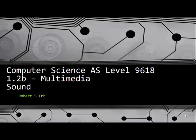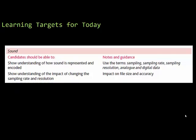In this video we're wrapping up the topic of multimedia by looking at sound. The learning targets are short and simple: show an understanding of how sound is represented and encoded, and be familiar with the terms sampling, sampling rate, sampling resolution, analog, and digital data. We'll also show understanding of the impact of changing the sampling rate and resolution, which impacts file size and accuracy.